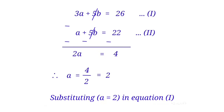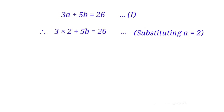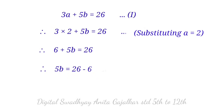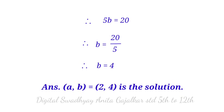Substituting a equal to 2 in equation first: 3 into 2 plus 5b equal to 26, so 6 plus 5b equal to 26, giving 5b equal to 20. Therefore b equal to 20 divided by 5, so b equal to 4. The answer is (a, b) equal to (2, 4).